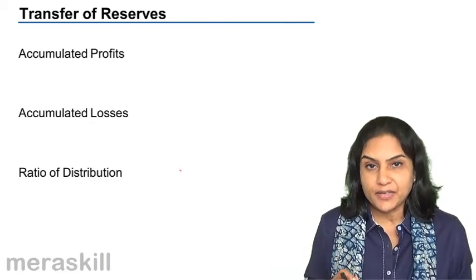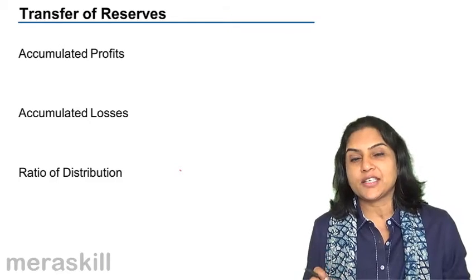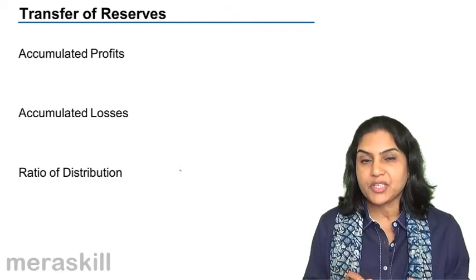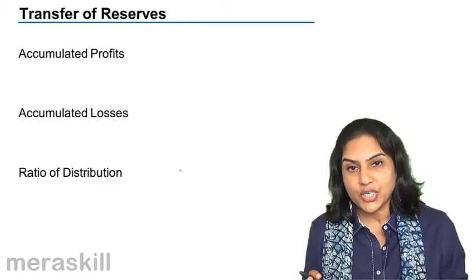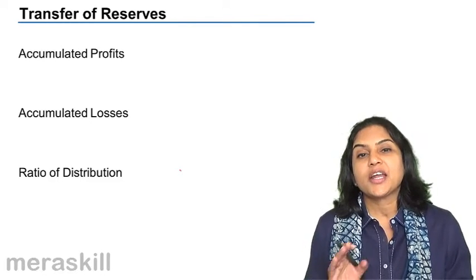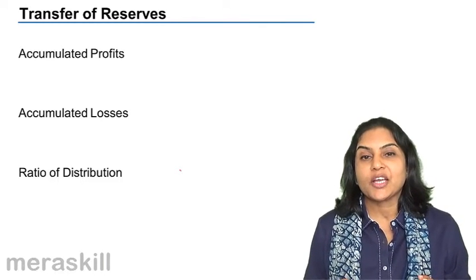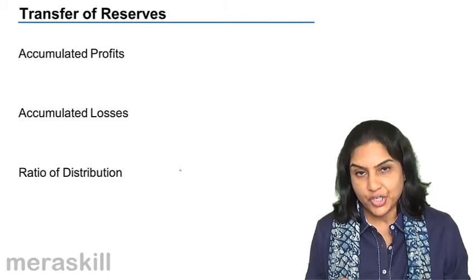So when a new partner is coming in, or whenever there is a change in the profit sharing ratio, these accumulated profits—general reserve, profit and loss account credit balance, etc.—should be transferred to the old partner's capital accounts in the old profit sharing ratio.